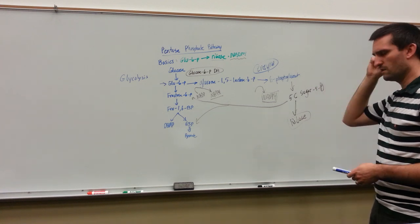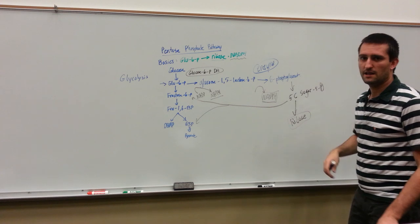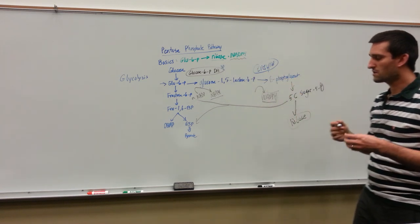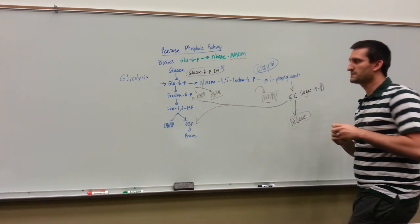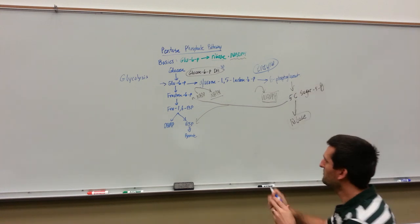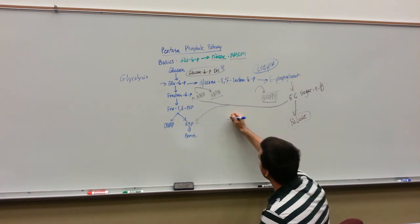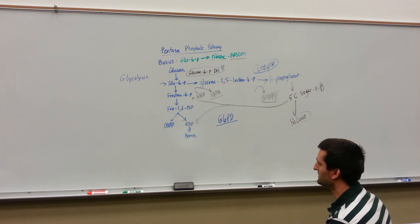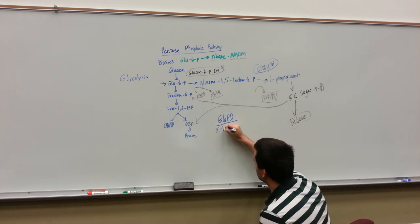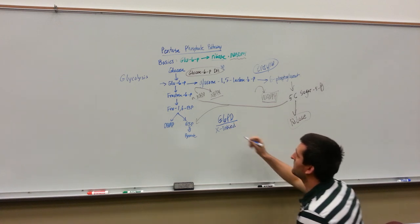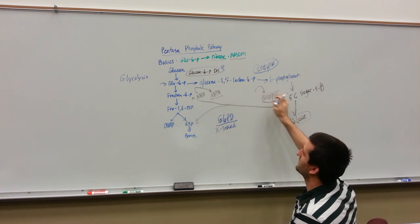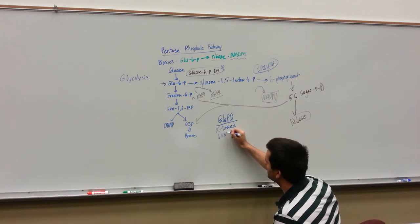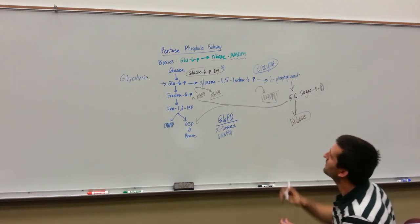Now let's get to our clinical correlate. I did skip an awful lot of steps, but what I want to focus on is a disorder called G6PD — glucose-6-phosphate dehydrogenase deficiency. It's going to be an X-linked disorder. We're not able to take that glucose-6-phosphate and shunt it into the pentose phosphate pathway, also known as the HMP shunt. So we're going to have decreased NADPH production.